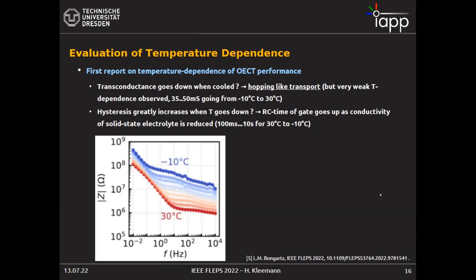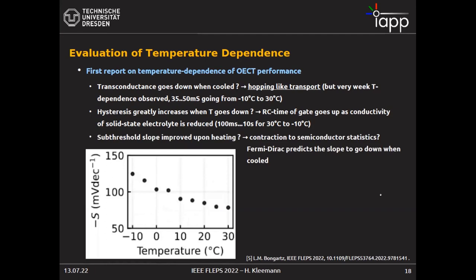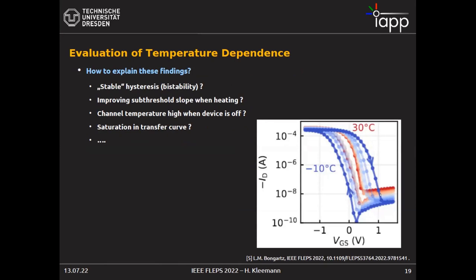That is why we call it true bistability of the device. Another interesting finding: we determined the sub-threshold slope at different temperatures and, very surprisingly, if you increase the temperature the sub-threshold slope goes down. If you believe in Fermi-Dirac statistics this should not be the case — it's very surprising behavior not explained in literature. So we ended up with more questions than answers: bistability of the material, very steep sub-threshold slope that improves when you heat the device, the channel cooling when current runs through it.